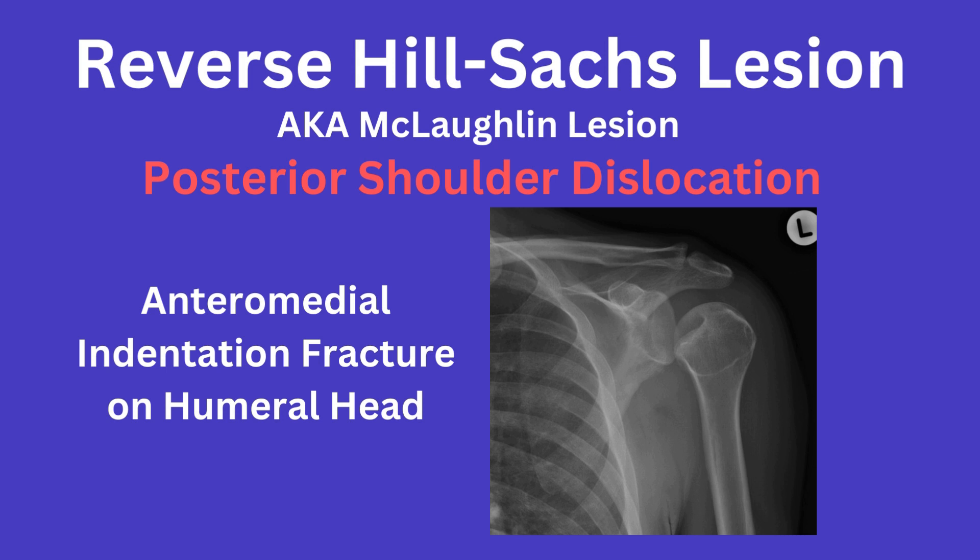Thus, knowing where the lesion is located on the humeral head in terms of anterior or posterior is easier to understand when you just think about the mechanics surrounding the shoulder dislocations.